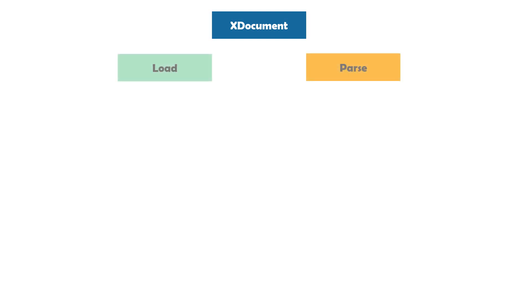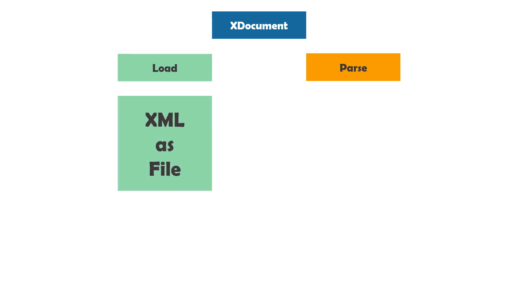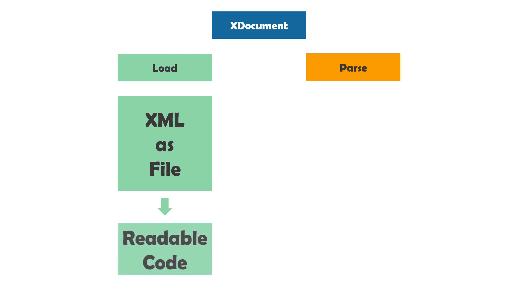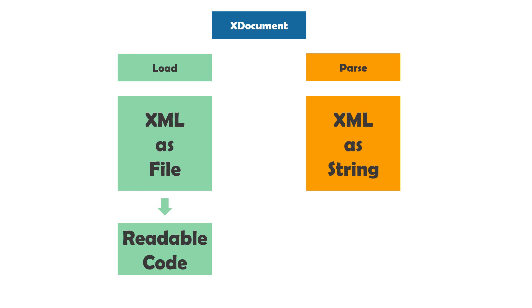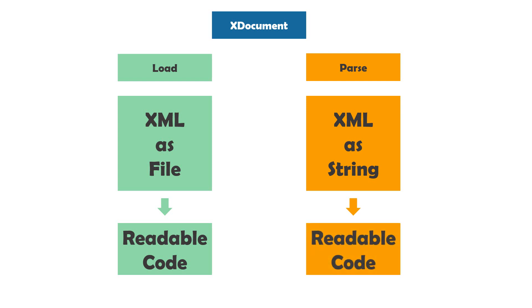Let's begin with xDocument. xDocument has two methods to read an XML document: load and parse. If your XML document is in a file and you want to get the XML from this file, you need to use load. Load reads the XML string and parses it — it converts the XML file to readable code. If your XML is stored in a string, then you need to use the parse method, which also converts your XML string to readable code. So these two methods are used to read XML.